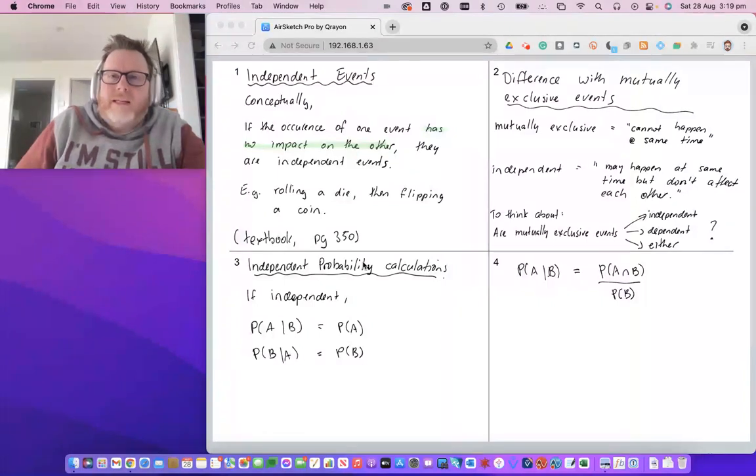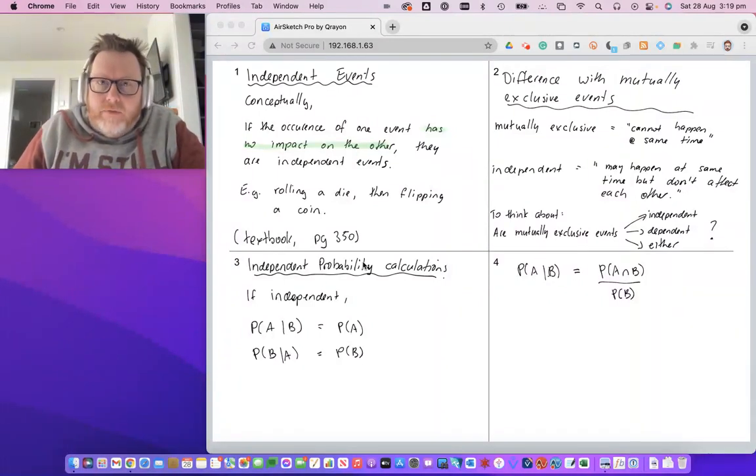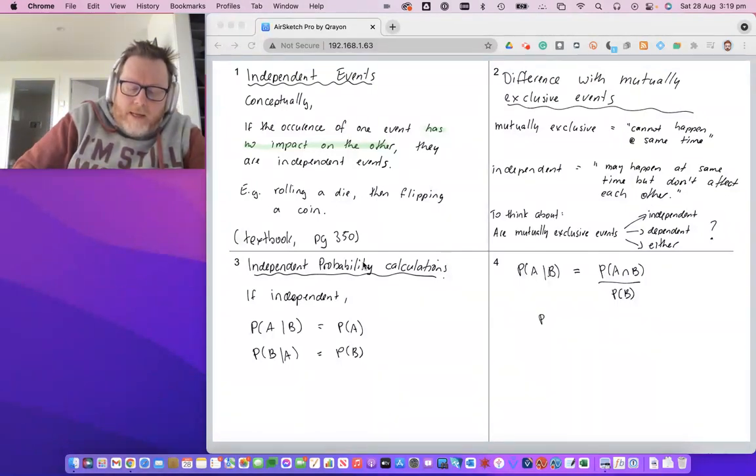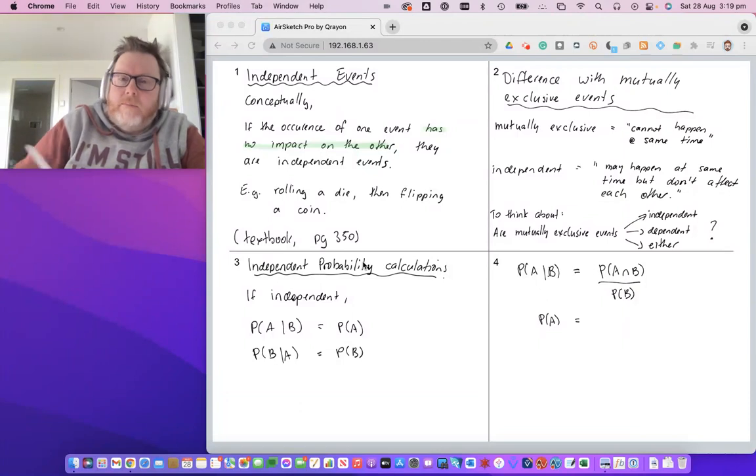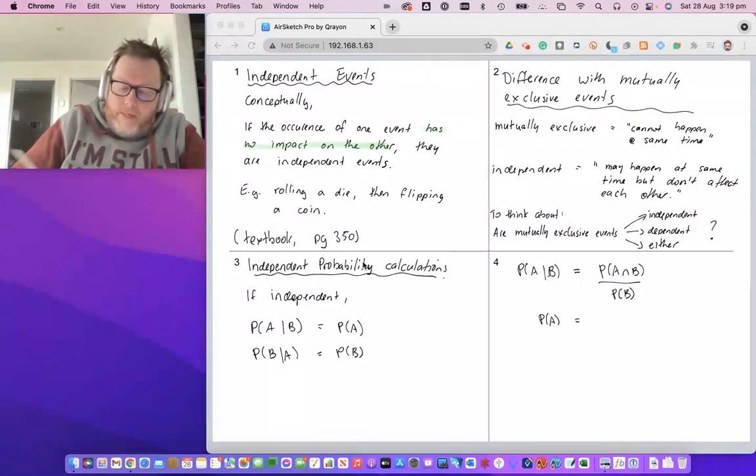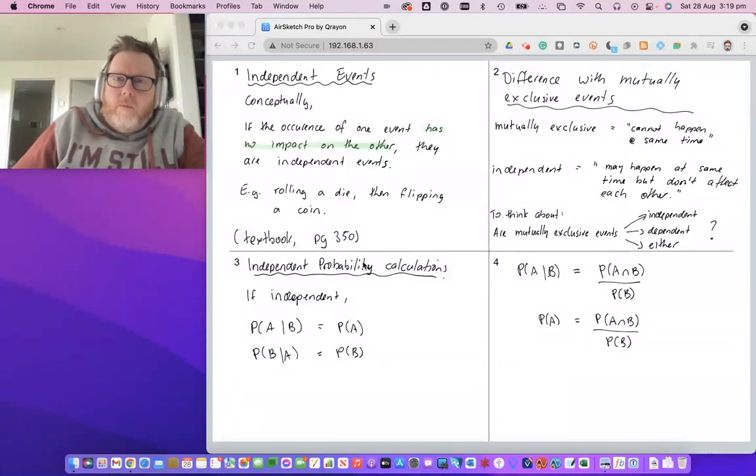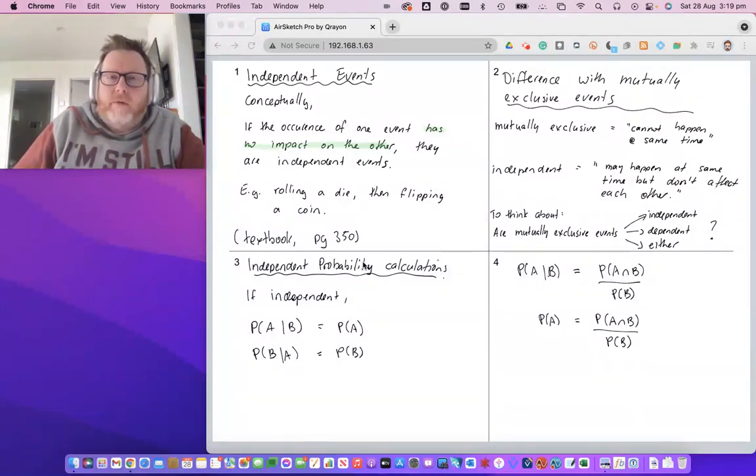But for the left hand side we just said that the probability of A given B is just the probability of A. So I can replace that left hand side with probability of A. So I've got probability of A equals probability of A intersect B over the probability of B. Remember, A intersect B means that both events have occurred.